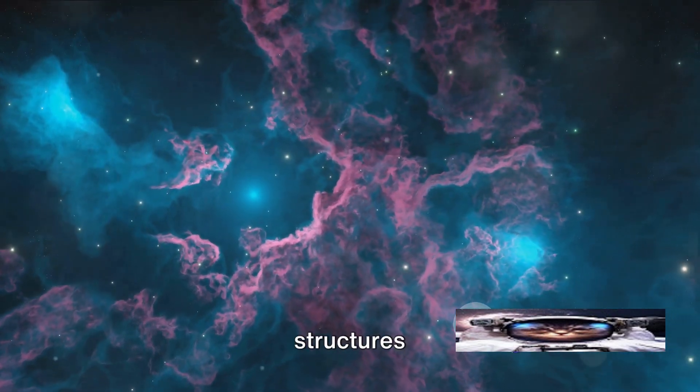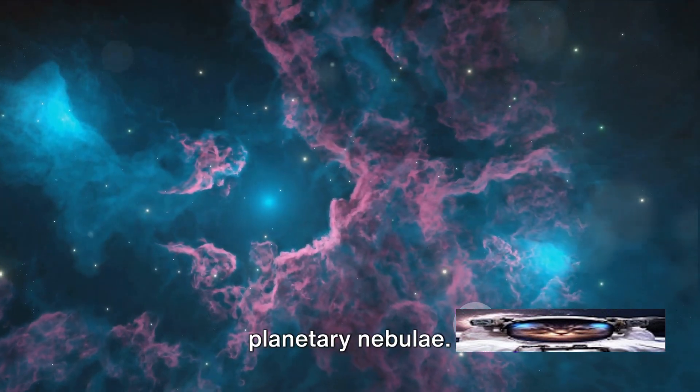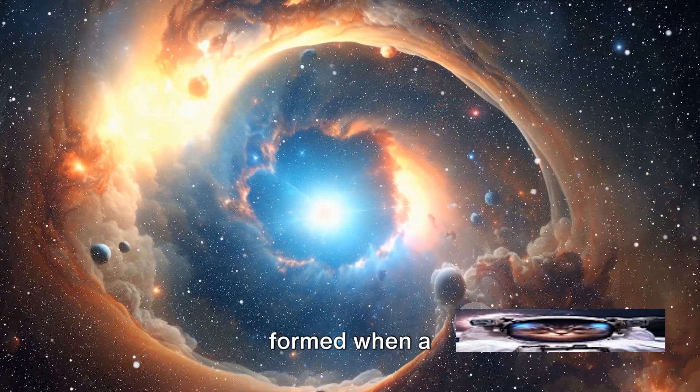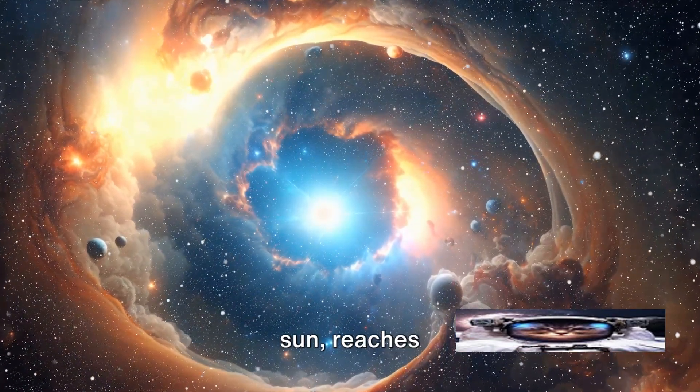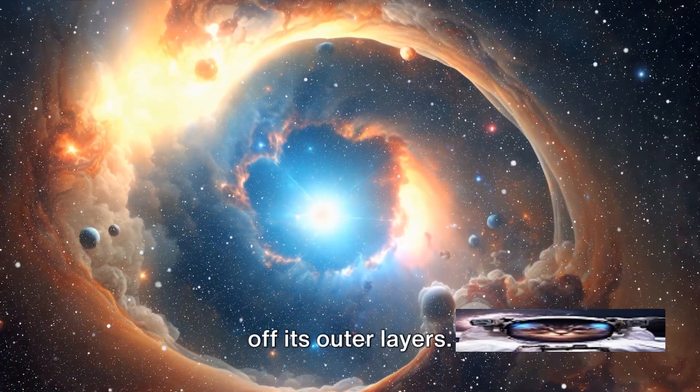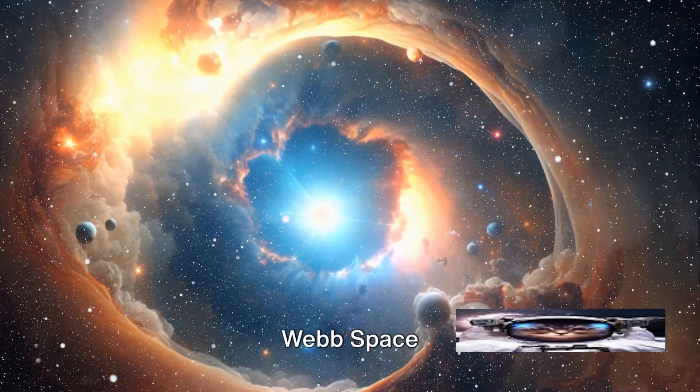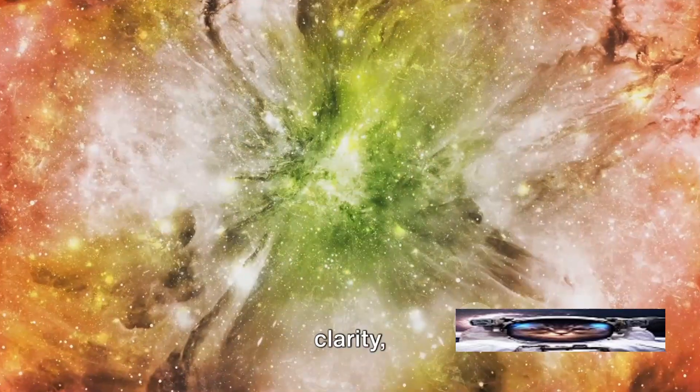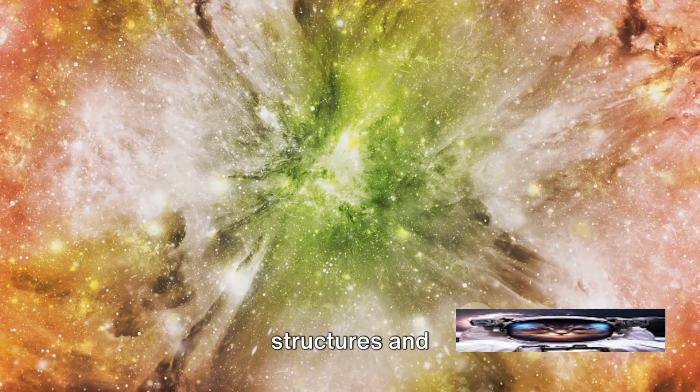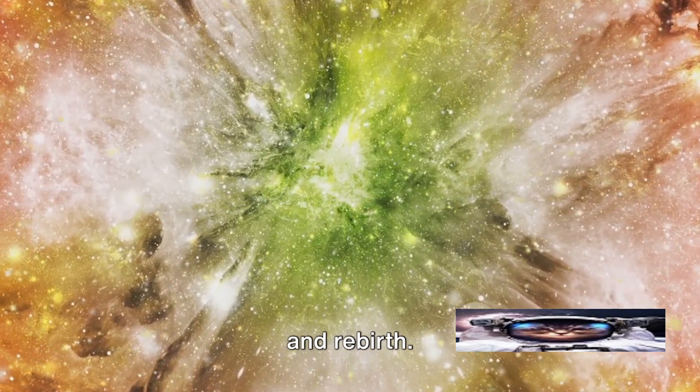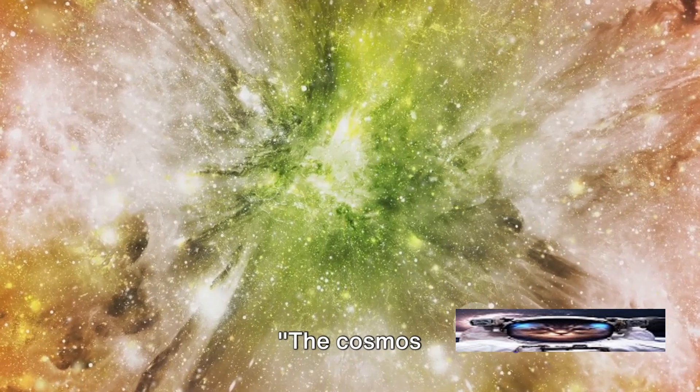Finally, we turn our gaze to the intricate and beautiful structures known as planetary nebulae. These glowing shells of gas and dust are formed when a star similar to our own sun reaches the end of its life and casts off its outer layers. The James Webb Space Telescope has been able to observe these nebulae with unprecedented clarity, revealing their complex structures and providing insights into the processes of star death and rebirth.